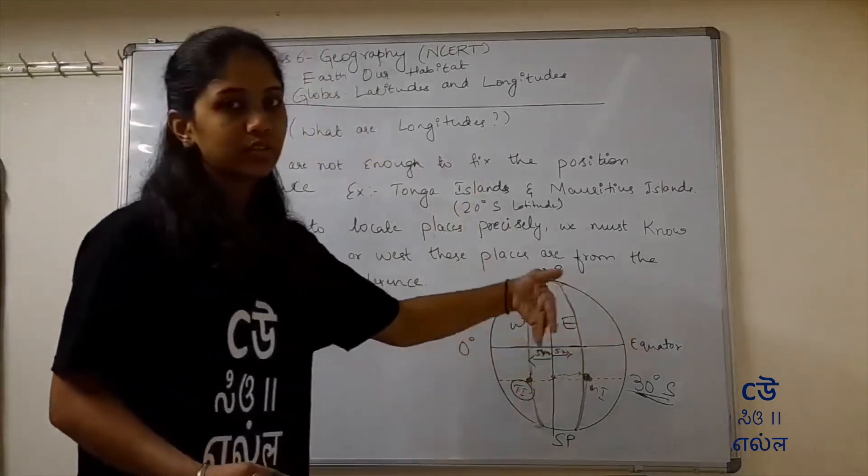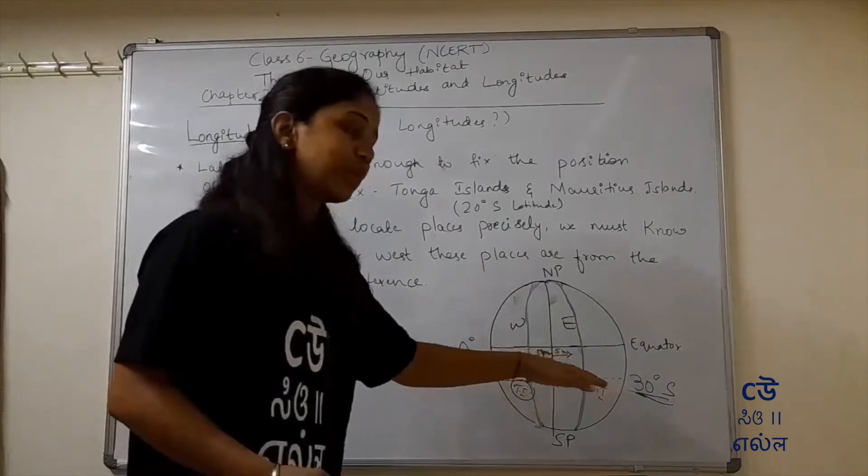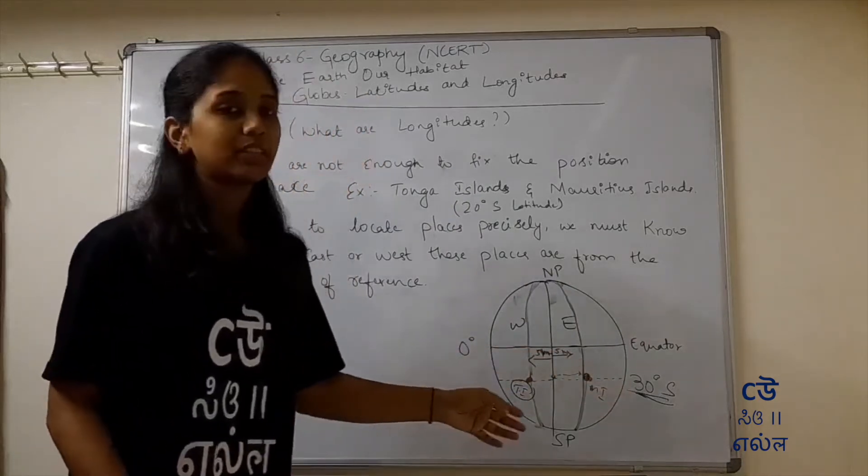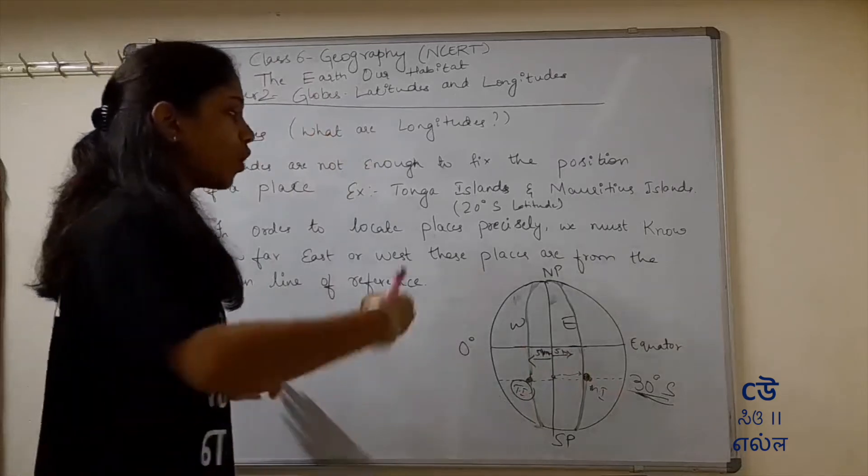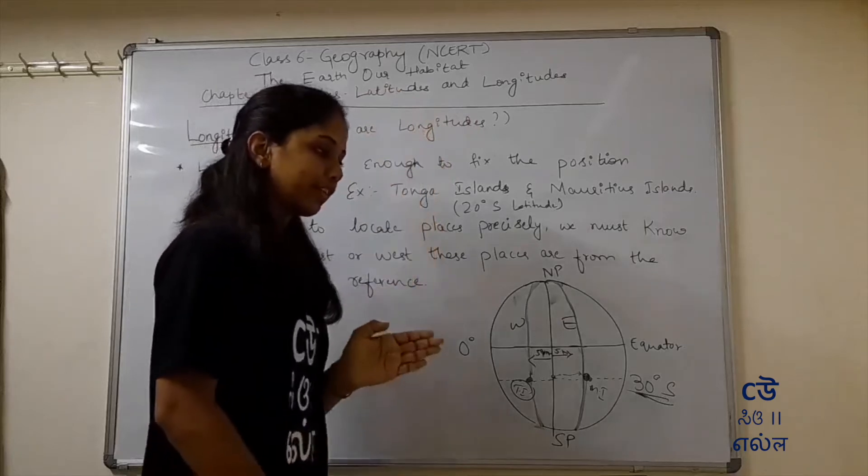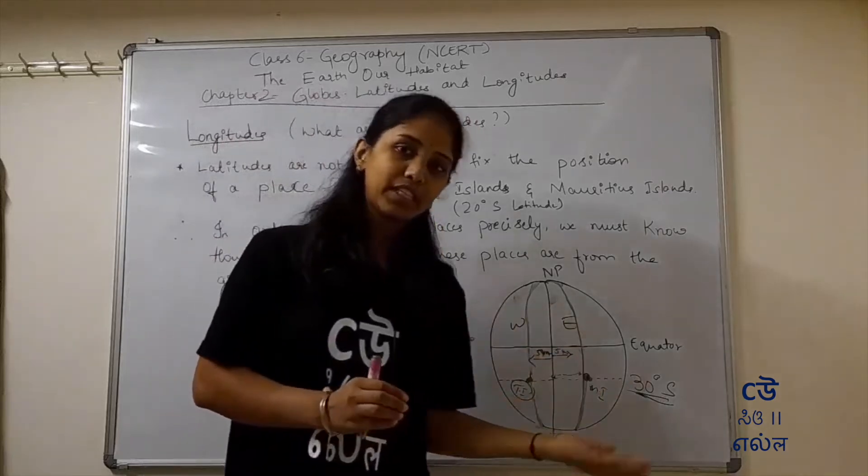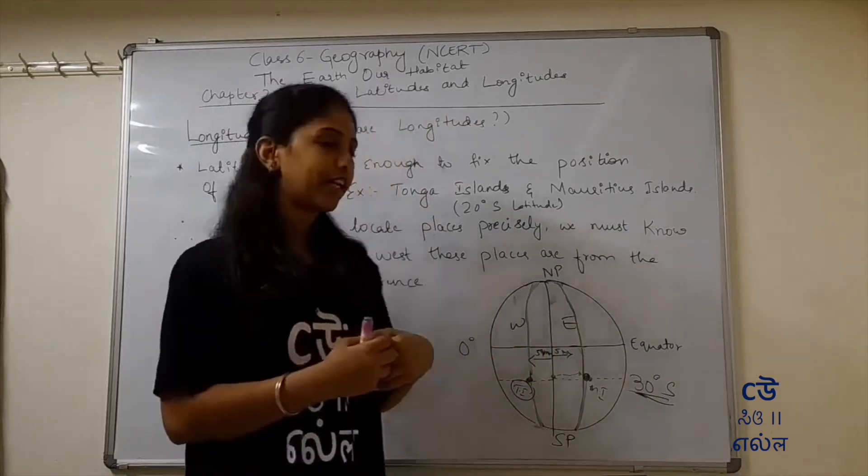If two people say 30 degrees south, from which place? 30 degrees south, there are so many places. You can't tell which one. But if we have one line of reference which runs from north pole to south pole, a line of reference. If you say 5 kilometers east or 5 kilometers west, then it's easy for you to locate.